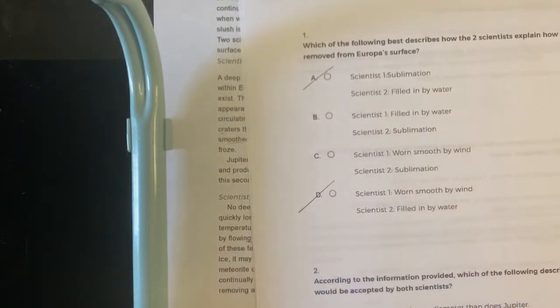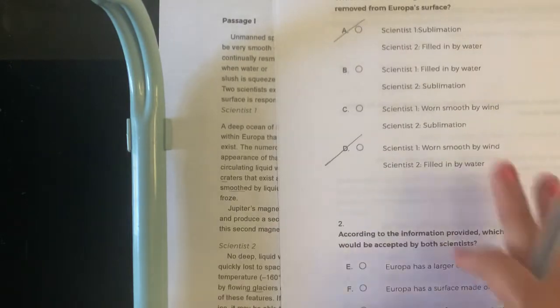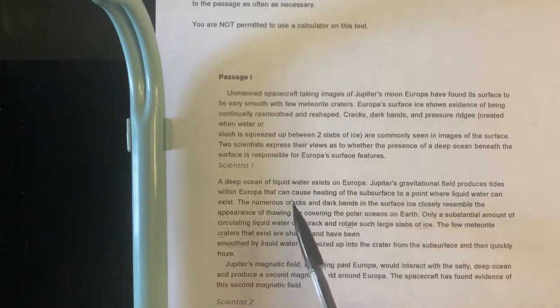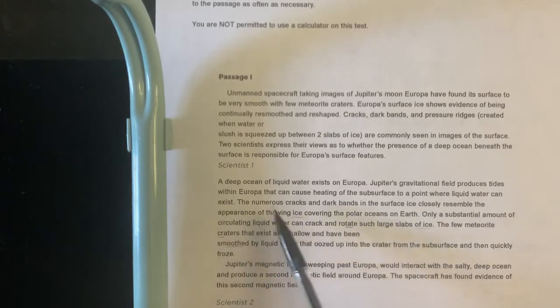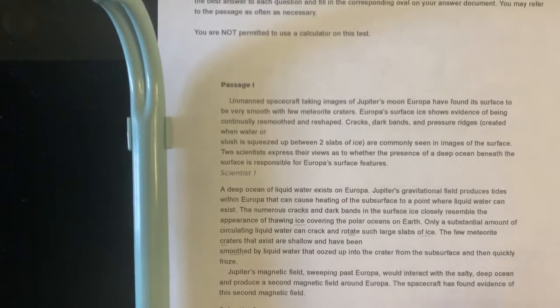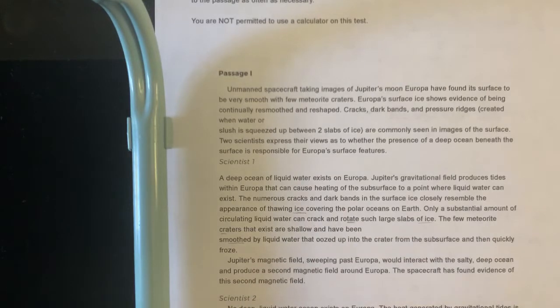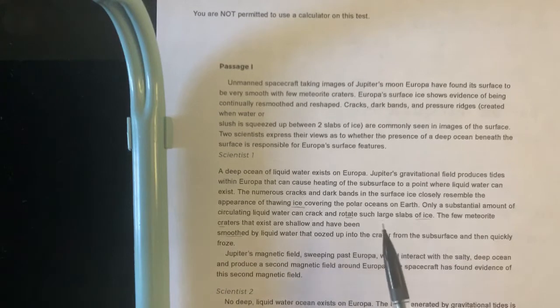So we're going to see if Scientist 1 thinks it's filled in by water or if it's worn smooth by wind. So again, they also say a deep ocean of liquid water exists. Gravitational field produces tides that cause the heating where liquid can exist. The numerous cracks and dark bands in the surface ice closely resemble the appearance of thawing ice covering the polar oceans on Earth. Only a substantial amount of circulating liquid water can crack and rotate such large slabs of ice.